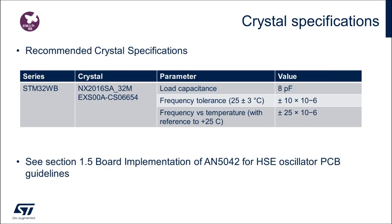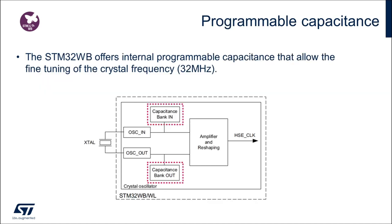The 32 MHz NX2016A from NDK is what was used in our WB Nucleo Reference Board, since this meets the required specifications for frequency tolerance and stability. Note that you can select other crystals as long as they have similar characteristics. To make things simpler, the WB features internal programmable load capacitors that can be used to tune the crystal frequency.